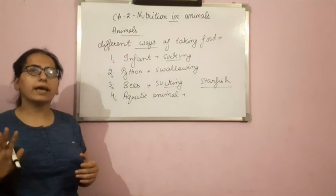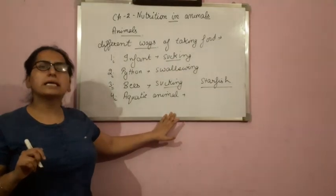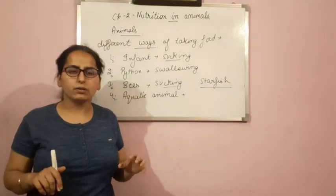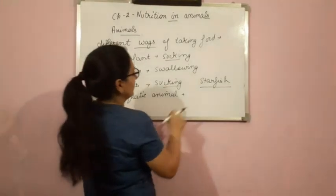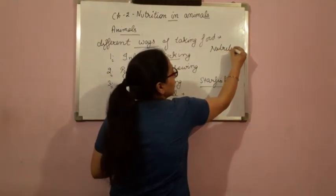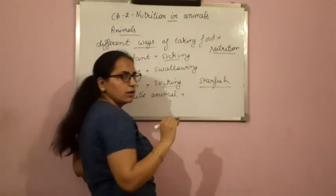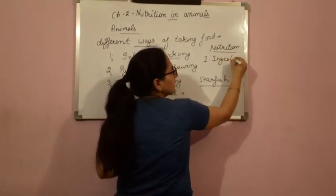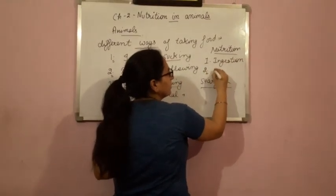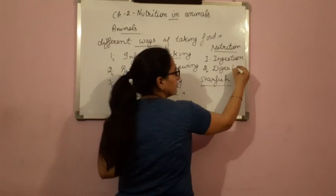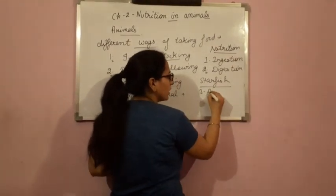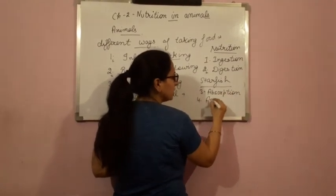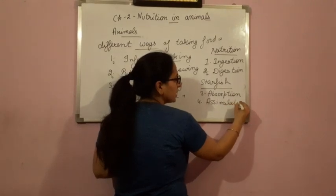So this is how different animals used to take food. Now our next topic is nutrition — basically what are the different steps in nutrition? There are five steps. First step is ingestion. Second step is digestion. Third step is absorption. Fourth step is assimilation. And the last step is egestion.